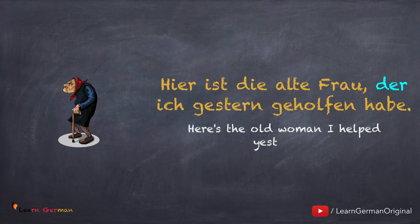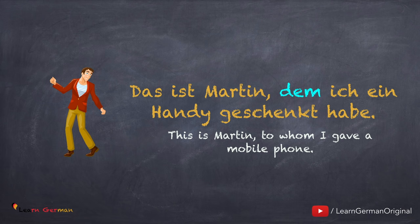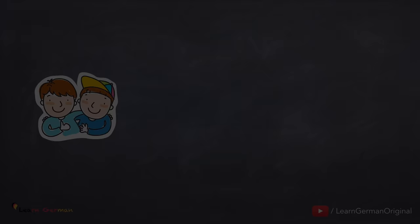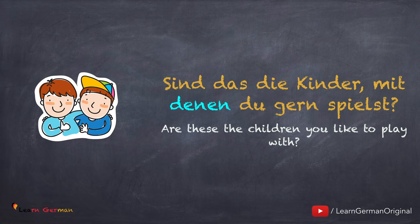Bevor wir in Detail gehen, hier sind ein paar Beispiele. Hier ist die alte Frau, der ich gestern geholfen habe. Das Dativpronomen 'der' ist hier für die alte Frau benutzt. Das ist Martin, dem ich ein Handy geschenkt habe. Und hier noch ein Beispiel: Sind das die Kinder, mit denen du gern spielst?